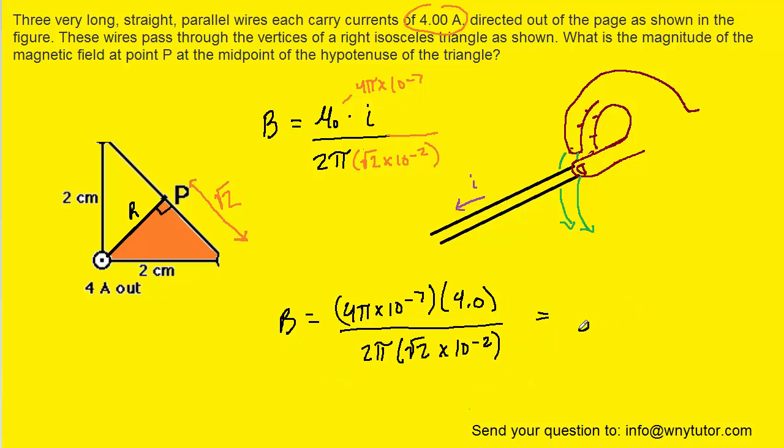And when you plug those in on your calculator you should get approximately 5.66 times 10 to the minus 5. And the standard unit of magnetic field is Tesla. So this would be the correct answer for the magnitude of the magnetic field at point P.